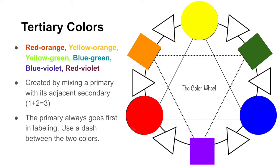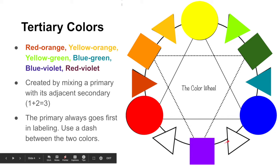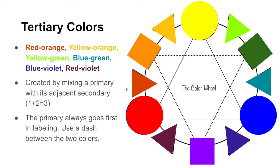So how might we make them? Well, if we add red plus orange, again, the names aren't very inventive, we get red-orange. Orange plus yellow, remember the primary always goes first when we label it, so we get yellow-orange. Yellow plus green gives us yellow-green. Green plus blue gives us blue-green. Blue plus violet equals blue-violet. Violet plus red equals red-violet. So the tertiary colors are always right in between the primary and the secondary color, and that's how we end up creating them.